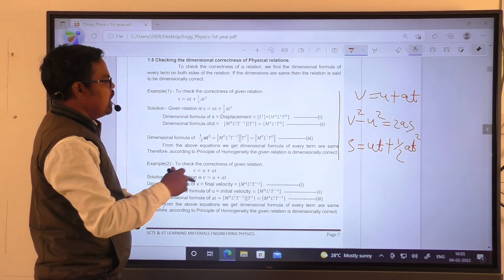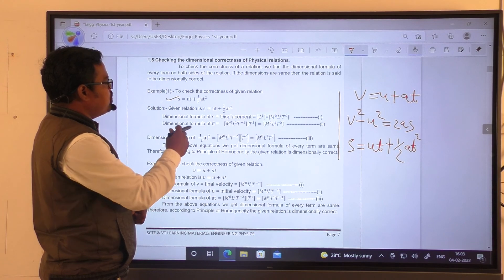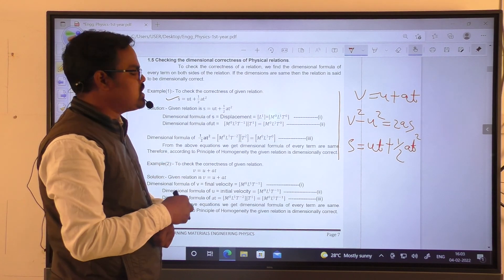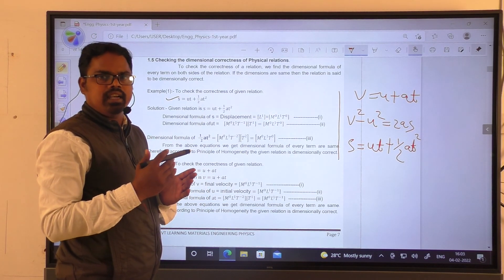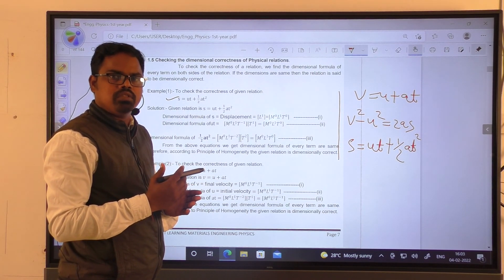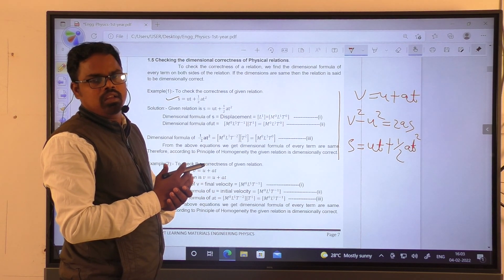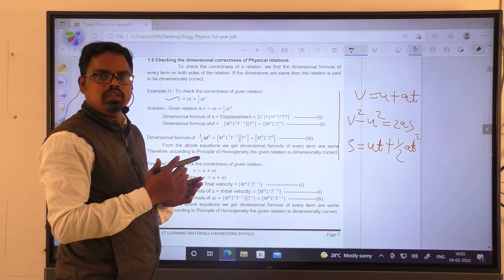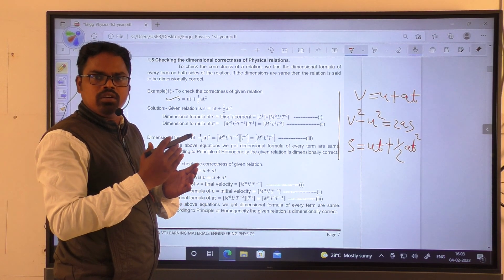In this equation there are two sides: left-hand side and right-hand side. We have to see how many terms are involved in this equation. Here three terms are involved in this equation: one is on LHS, two are on RHS.